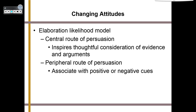When talking about attitudes, there are ways to persuade people to change them. We use something called the elaboration likelihood model. There are two routes: the central route of persuasion, where you provide your evidence, talking points, and arguments; and the peripheral route of persuasion, where we associate ourselves with positive cues and the opposing side with negative cues. We see both of these in American politics all the time.